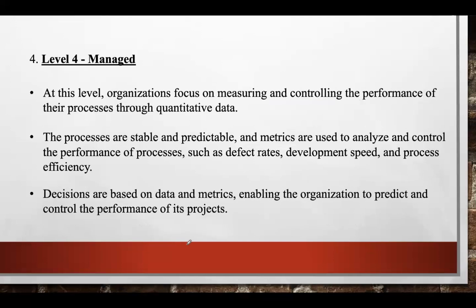The fourth level is the Managed level, where organizations focus on measuring and controlling the performance of their processes through quantitative data. Organizations begin to collect and control data of the processes in the software they created. Level 4 also concentrates on the company's product quantitative data and its quality. After continuing to identify and improve from mistakes in product development, flower preservation, and delivery over about 8 months, the flower shop collects comments from consumers and manages them to improve product quality based on customer wishes.